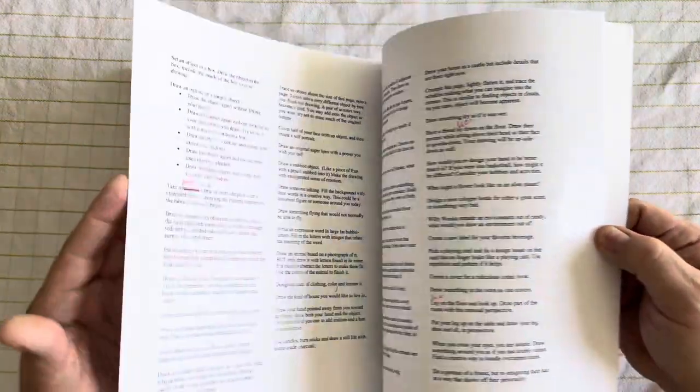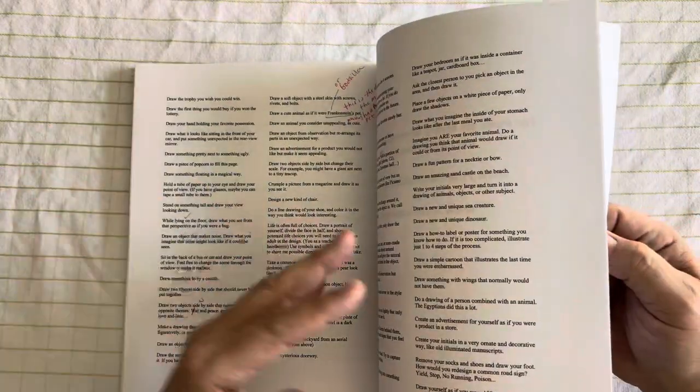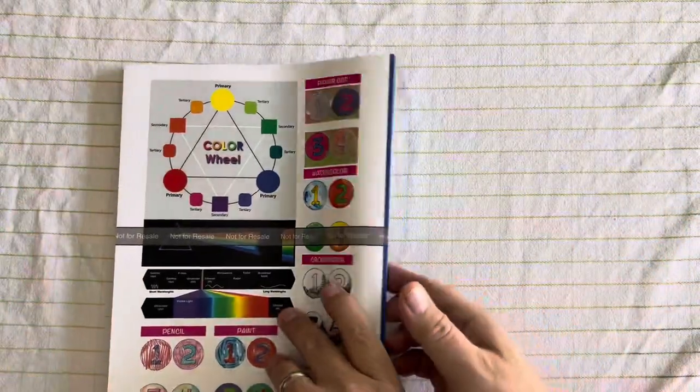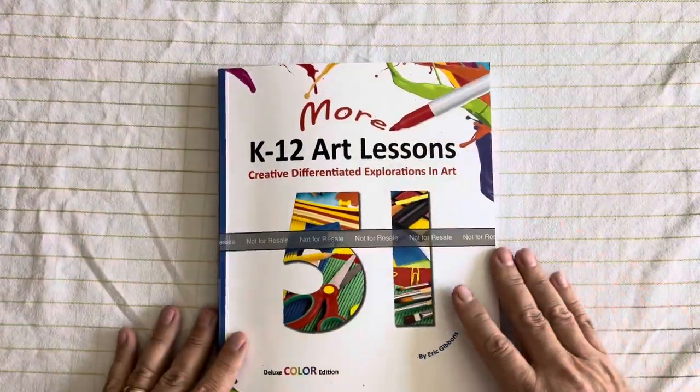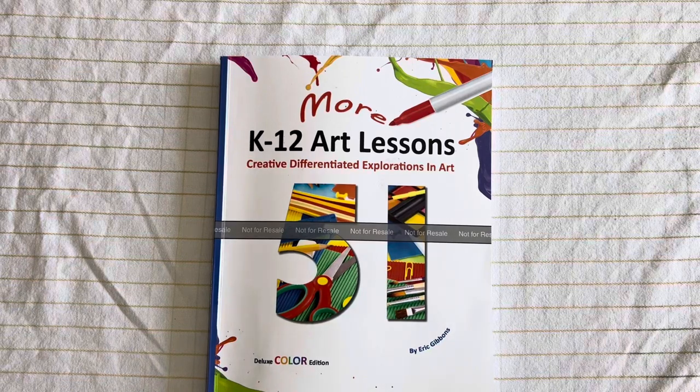And then over 100 sketchbook ideas. So when you're looking for ideas for what students should do when they finish a project early. We've got about 180 ideas here for you. So if you're interested, you can get a great price on Amazon for this book. Thank you so much and have a great day.